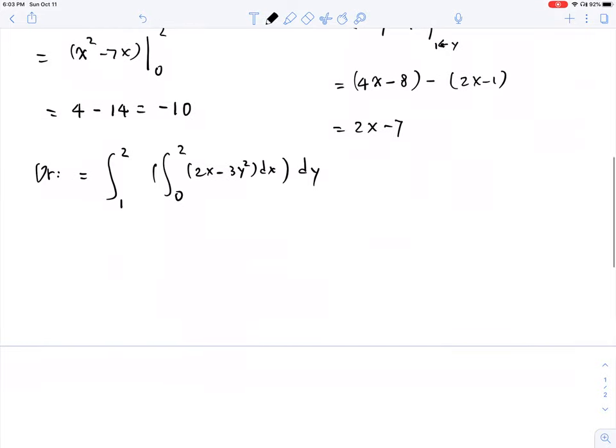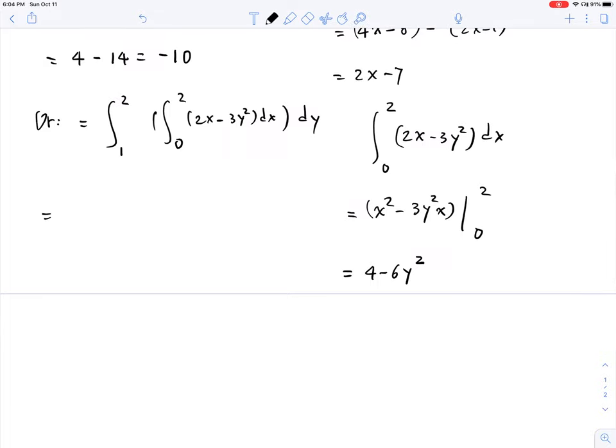So now we do it again on the side, from 0 to 2, 2x minus 3y squared, dx, remember y is a constant, so this is x squared, minus 3y squared x, and we plug in 0 and 2. So when x is 2, we have 4 minus 6y squared, right? When x is 0, it's simply going to be 0. So now we have this one, let's from 1 to 2, and 4 minus 6y squared, and dy, okay?